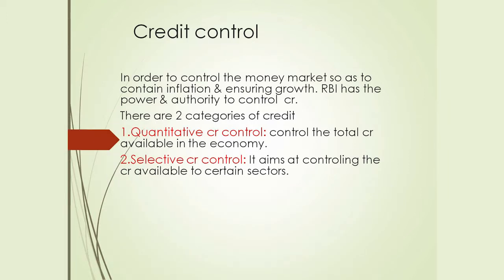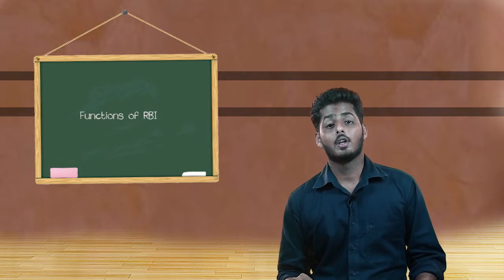The next point is credit control. In order to control the money market credit, so as to contain inflation and ensure growth, RBI has the power and authority to control credit. There are two categories of credit control: the first one is quantitative credit control, which means controlling the total credit available in the economy; the second one is selective credit control, which aims at controlling the credit available to certain sectors.